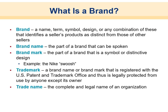Branding is a name, term, symbol, design, or any combination that identifies a seller's product as distinct from those of other sellers — think Apple or Nike. The brand name is the part that can be spoken. The brand mark is the symbolic or distinctive element — like the Nike swoosh. A trademark is a brand name or brand mark registered with the U.S. Patent and Trademark Office and legally protected from use by anyone except its owner, so Reebok can't use Nike's swoosh. The trade name is the complete legal name of the organization.